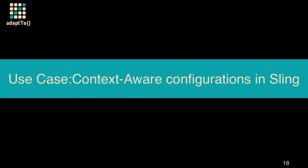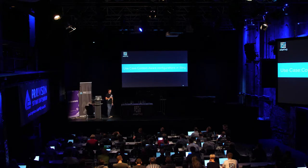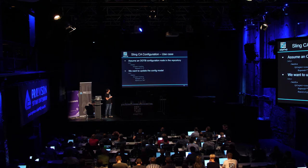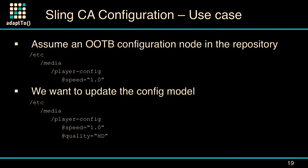Now I'm going to have a use case, leveraging context-aware configs to show you how you can structure configuration so you don't end up with clashing concerns. Let's assume we have a configuration that's in ETC — ETC/media-player-config — that has one property, speed, and you ship that. At some point in a subsequent version, we may want to add another property, like quality, assuming this is controlling some kind of video playback. The thing is, once you want to add another property and deploy it, you have a problem.